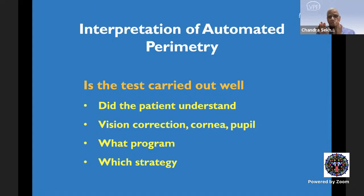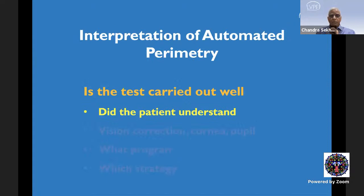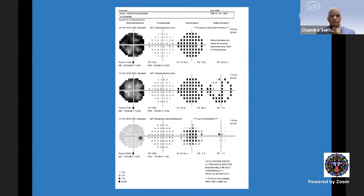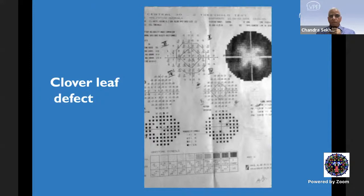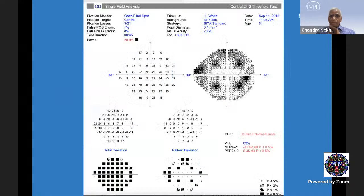To answer whether the test was carried out well, Talvir has covered this in great detail. I'll give clinical examples. The first question is whether the patient understood how the test needs to be done. This is an example of three fields done on the same day — starting from the first, which is very bad, to the third on the same day where performance improved tremendously. That means it took a long time for the patient to understand. Another example is the cloverleaf deformity: the four cardinal points were checked when the patient was attentive, then he decided not to participate anymore.